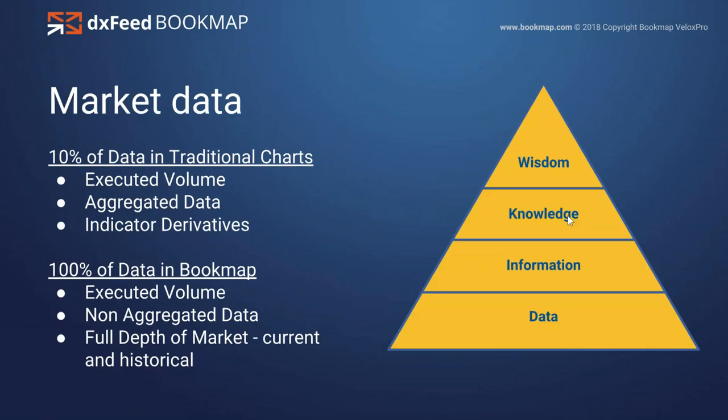We're going to talk a little bit about market data. This is an important part, especially today more than ever, because we're getting into some of the nuances in order flow, and having good data makes a difference. In the past and also today, most traders are really only accessing about 10% of the data in traditional charts. Even with a footprint chart, you're only accessing about 10% of that data.